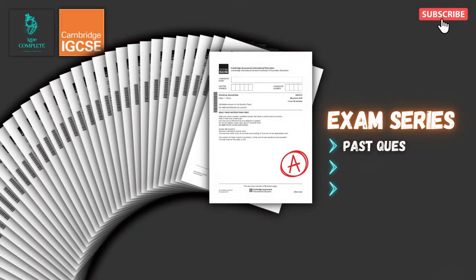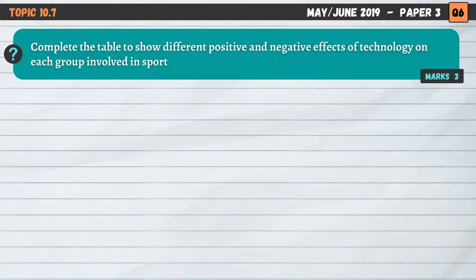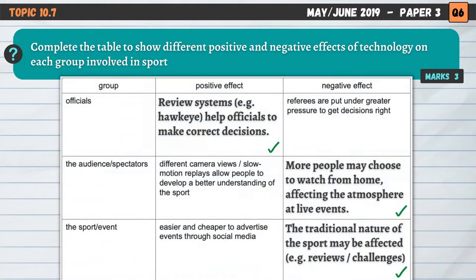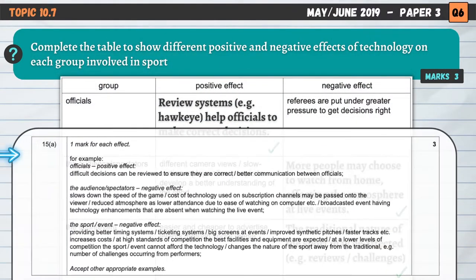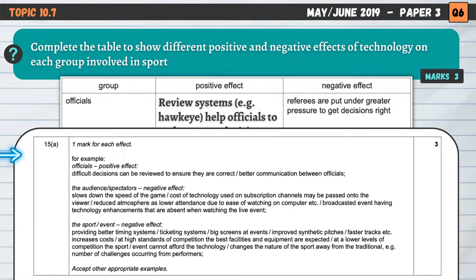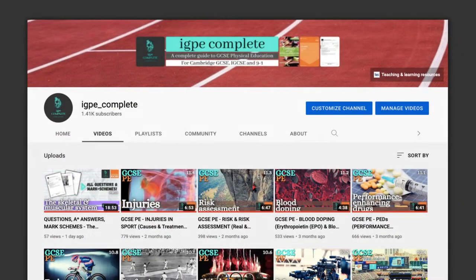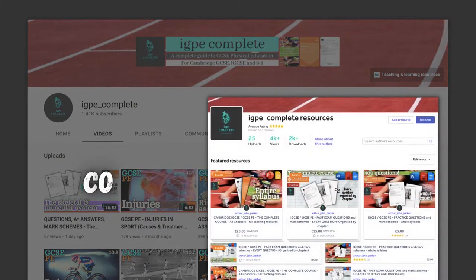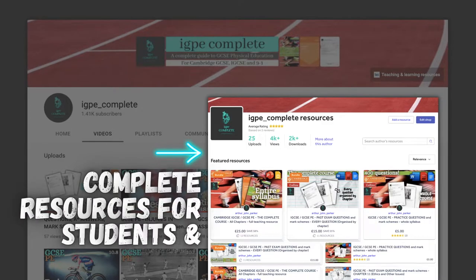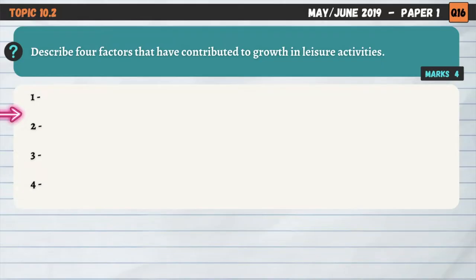Hello and welcome to another complete Cambridge IGCSE PE lesson. In this video, we'll break down and simplify 14 recent past exam questions on Chapter 10, Social, Cultural and Ethical Influences. If you enjoy this video, consider subscribing to the channel, give the video a thumbs up and visit my channel page for short summary videos and my resource store by clicking the link in the description for complete revision and teaching materials.